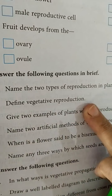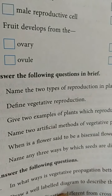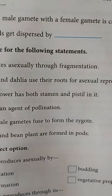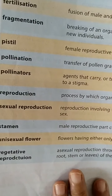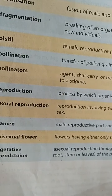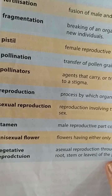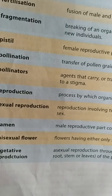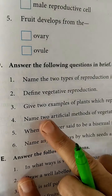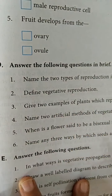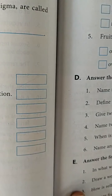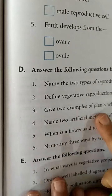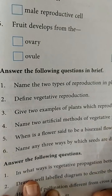Second question: define vegetative reproduction. It is given in your book's keywords on page 140. Third question — two examples of plants which reproduce through spore formation are mosses and ferns, given on page 131.